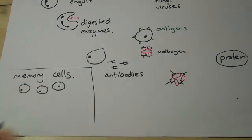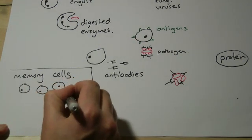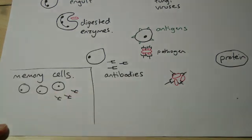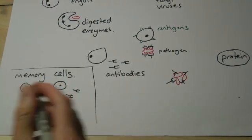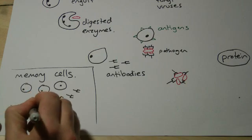You've already got plenty of them, and they respond very, very quickly. They produce the antibodies very quickly, and you're able to fight off the disease before it has a chance to really take hold. That is what we refer to as immunity.